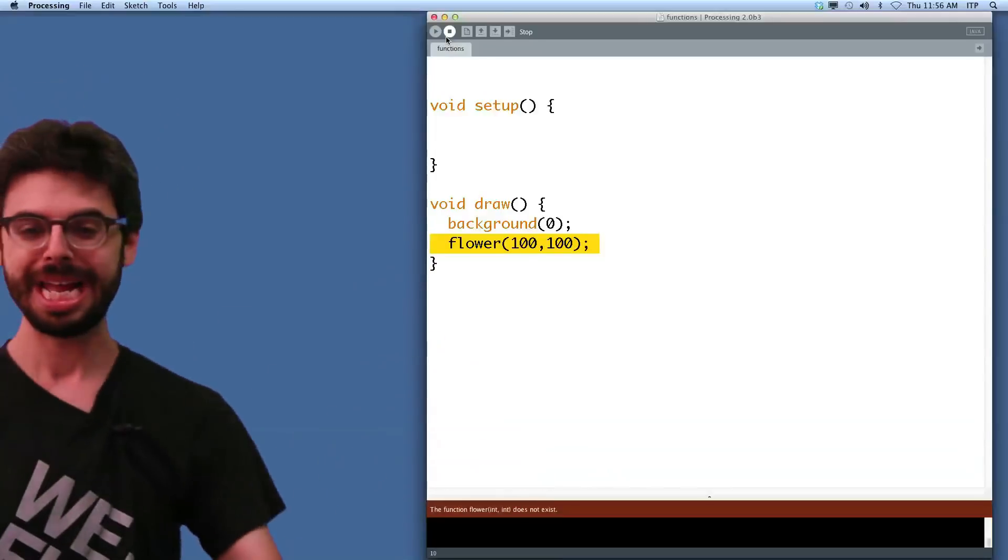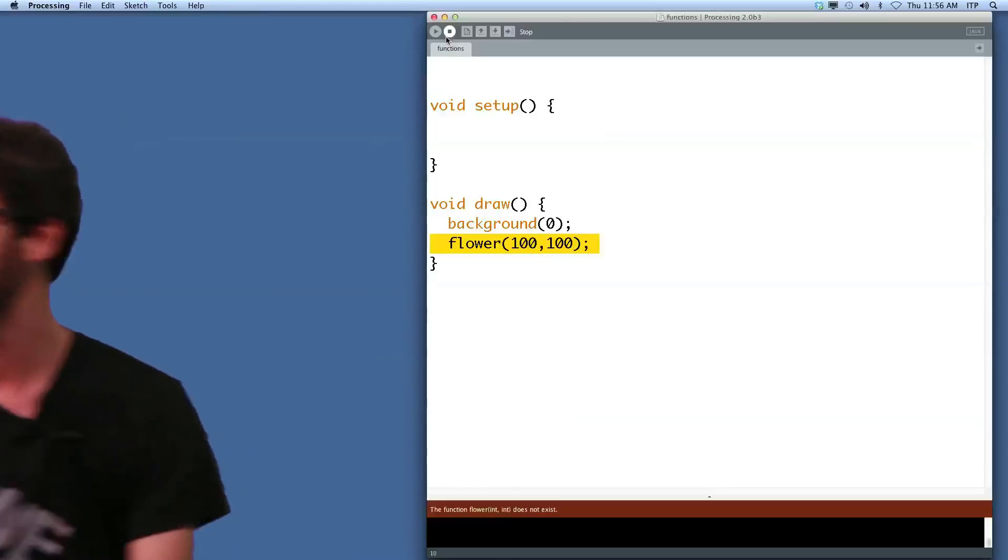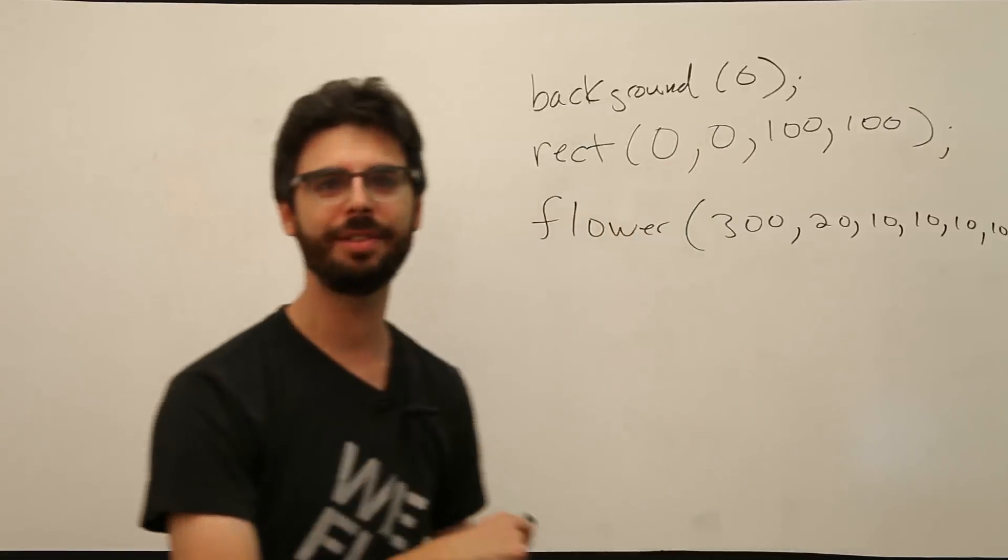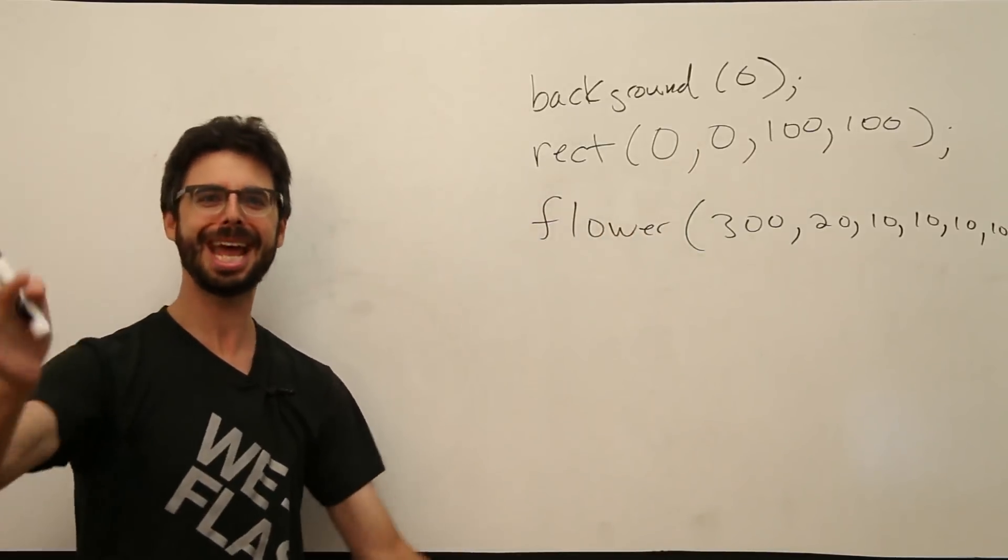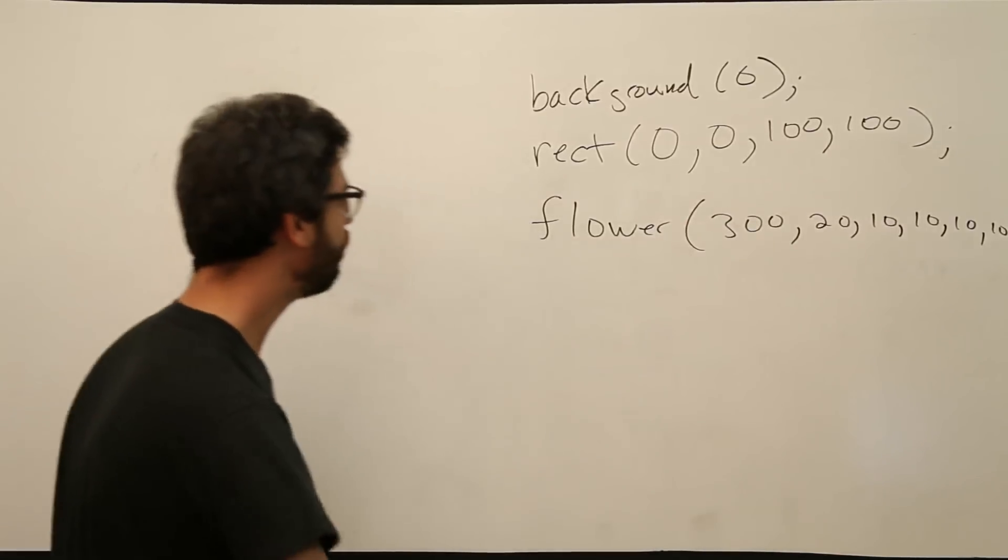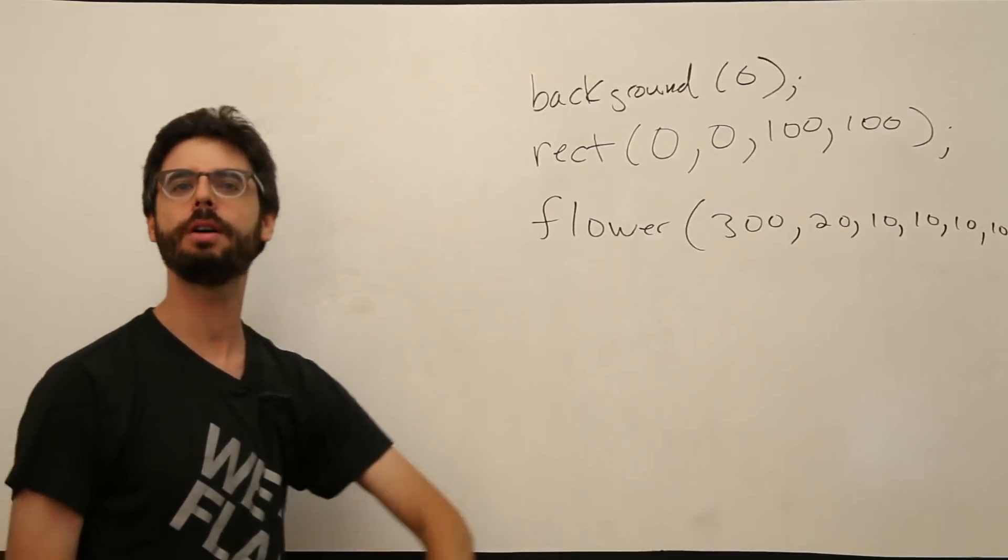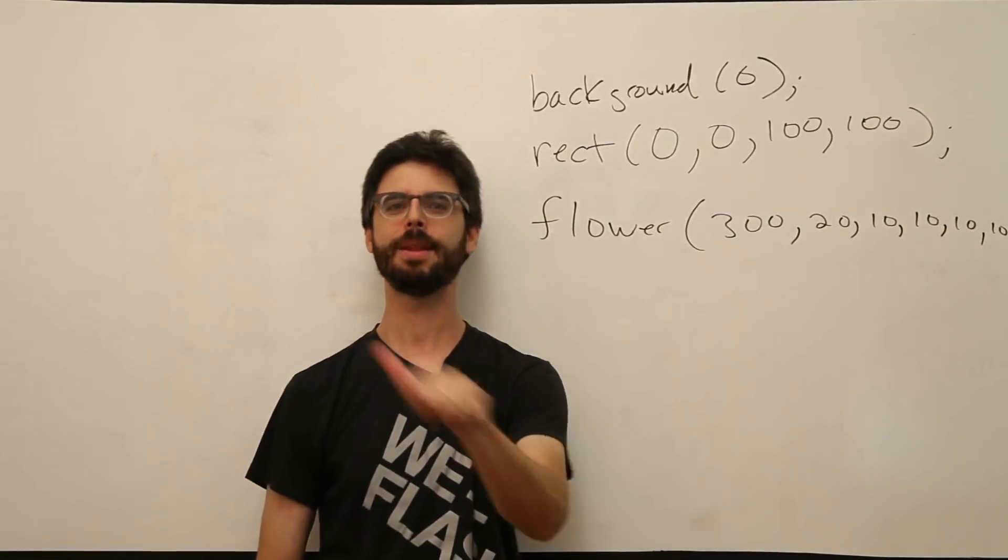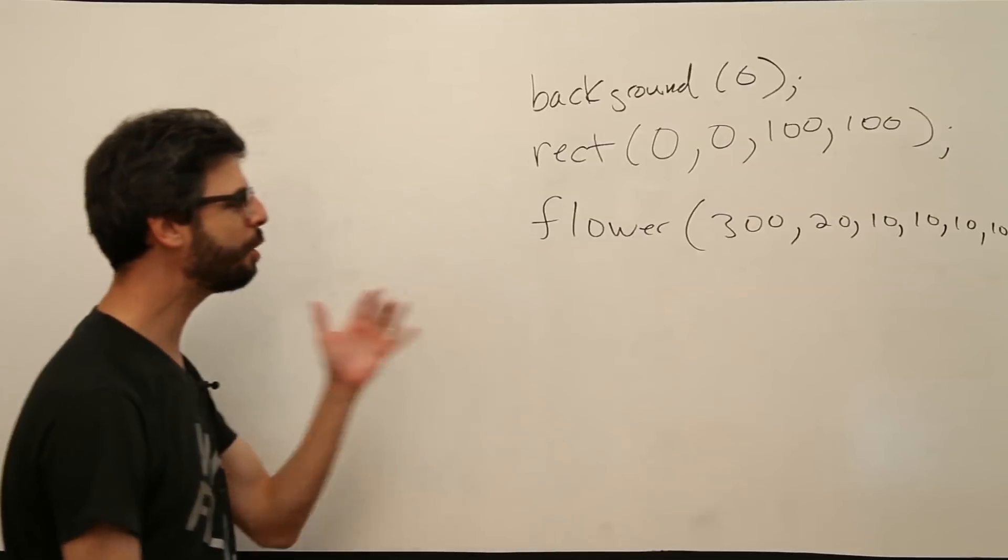That was a little bit of time wasted there because you knew what was going to happen. The function flower, int int, does not exist. It does not exist because no one has defined that function. I am here today to say to you, this is the moment where you can begin to define your own functions. Right? We can start to say, you know what, nobody wrote a function for how to draw a flower in processing. I'm going to write that function. And how do we do that?